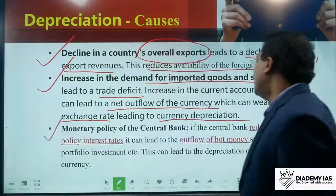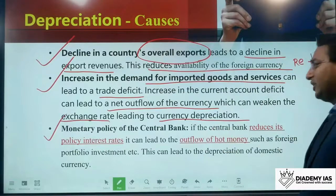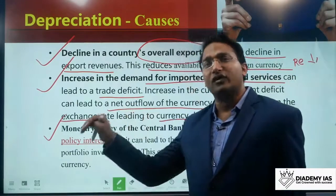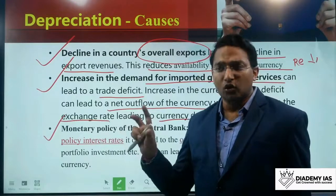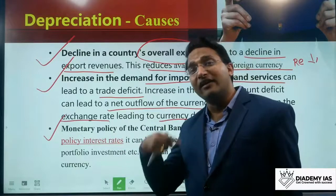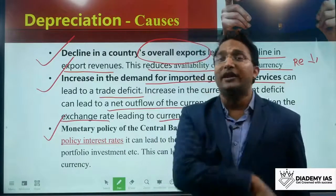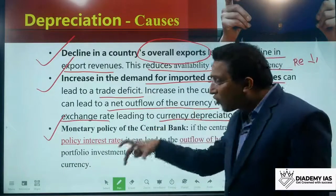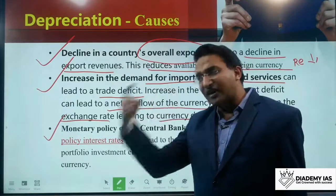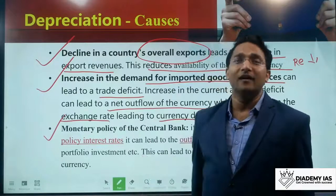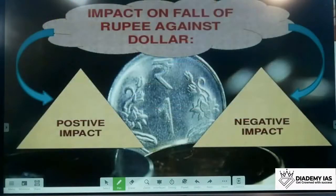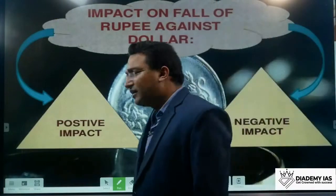Monetary policy of the central bank is another reason. If the central bank reduces its policy interest rate to boost economic activity, investors have no incentive to invest in the Indian market; they will invest outside India. Money flows from India to the USA, the supply of foreign currency comes down, the value of foreign currency increases, and the price of the domestic currency falls. Now let us look at the impacts of a fall in the rupee against the dollar.